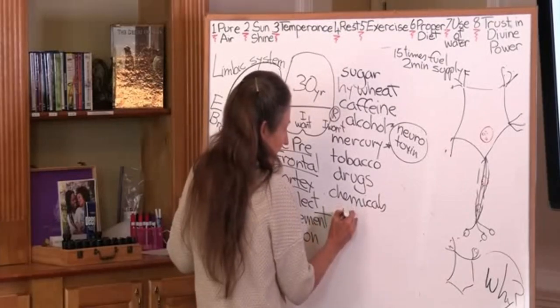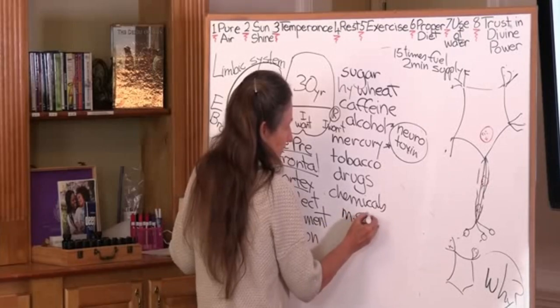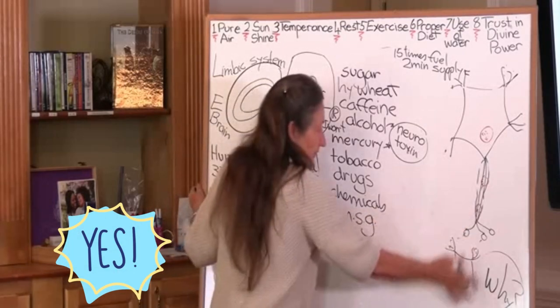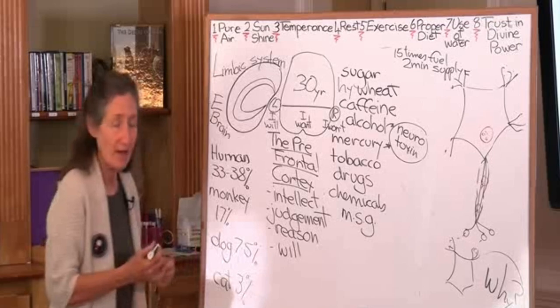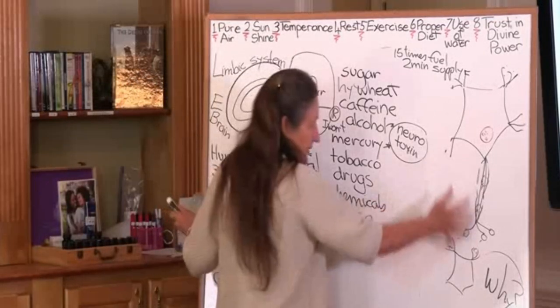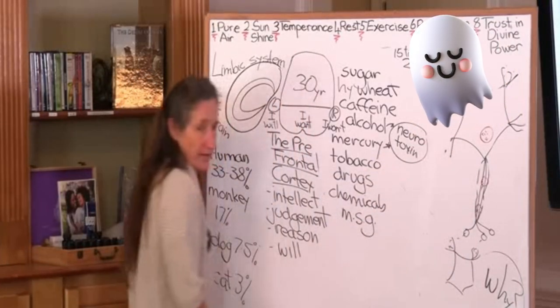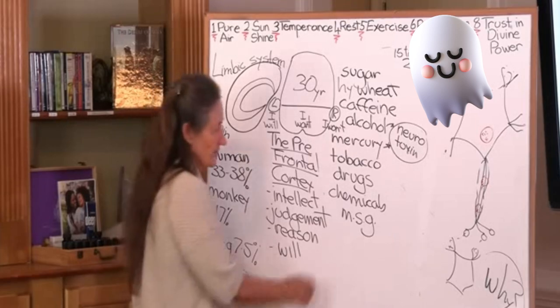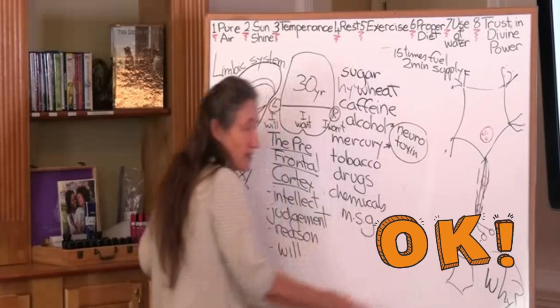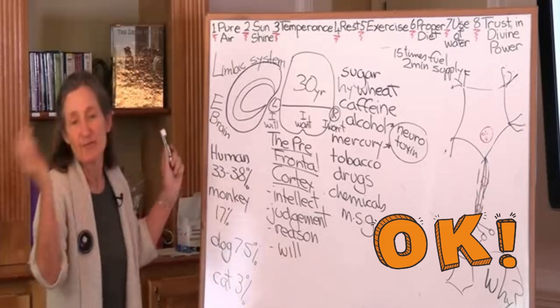MSG: monosodium glutamate causes the nerve cells on the tongue to overfire, and when they overfire the cell gets exhausted and can even die. If it causes nerve cells on the tongue to overfire, it causes nerve cells everywhere to overfire.